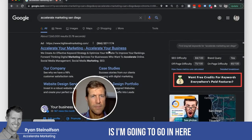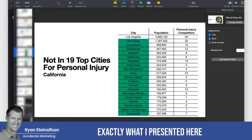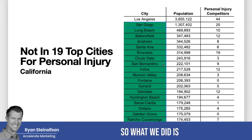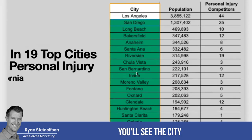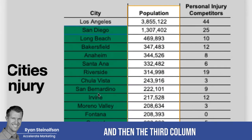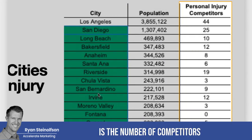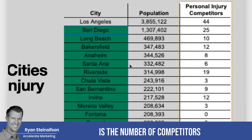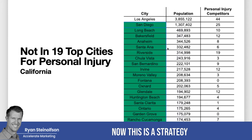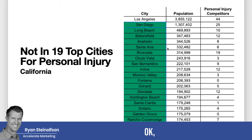What I'm going to do is show you exactly what I presented for one of our clients. We created a simple spreadsheet. In the first column you'll see the city, in the second column the population, and in the third column the number of competitors in that particular city for your specific job type. This is a strategy you'd want to implement if you are looking to open up a new location.